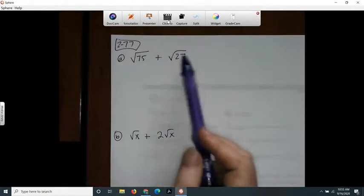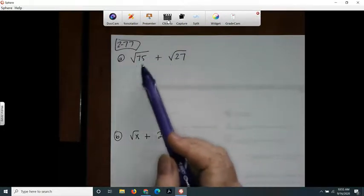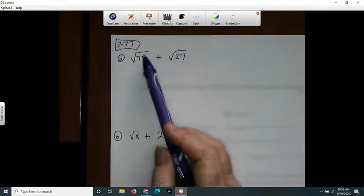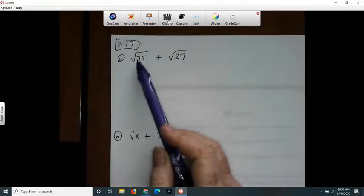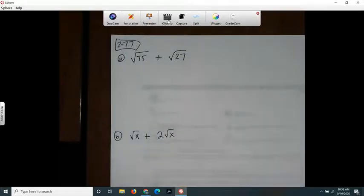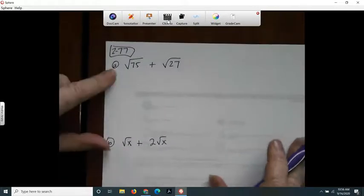I can simplify them by taking, these are square root radicals, so I'm going to take out perfect squares. So they're square roots. I know my perfect squares are like this.